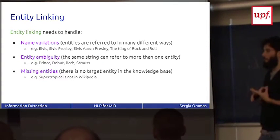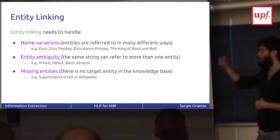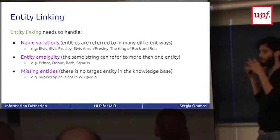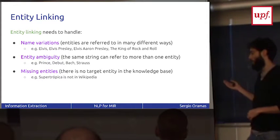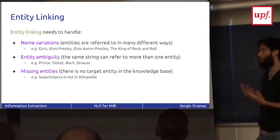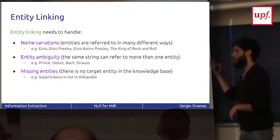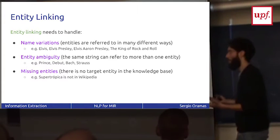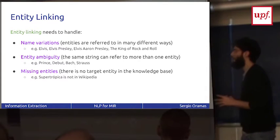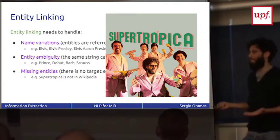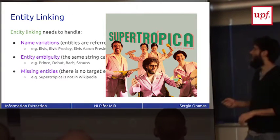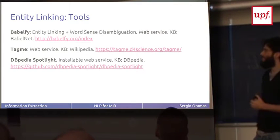Entity linking has to handle three kinds of problems. First is name variations - the same entity may have different lexicalizations. For example, Elvis, Elvis Presley, the King of Rock and Roll all refer to the same entity. Entity ambiguity: the same text snippet may refer to different entities. Prince may be the artist or maybe just the prince, the son of the king. The debut may be the album of U2 or it might be just a debut album. Bar is the father, the son, or the structure of the song. And also, the library is missing entities - not everything is in the knowledge base. In the case of music, more. For example, Supertropica is not in Wikipedia. Okay, so the media is not perfect.